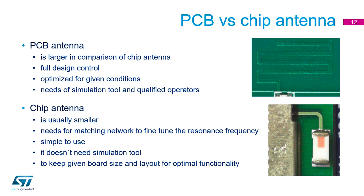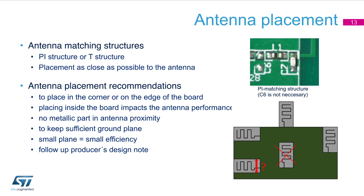A chip antenna is usually smaller. However, be careful about fine-tuning steps of the resonance frequency. For a given space and location, you will need to use a matching network to fine-tune the resonance frequency. Its use is simple, but for optimal functionality it is necessary to keep the layout of the manufacturer. Any modification has an impact on performance. Now a couple of basic rules for matching and placement.